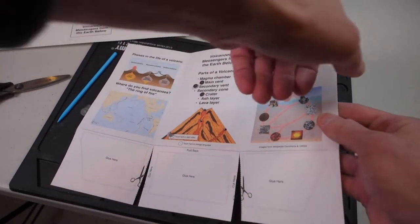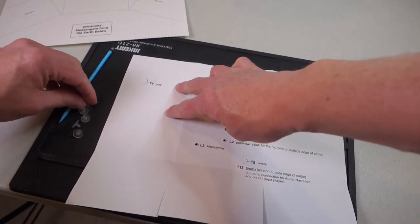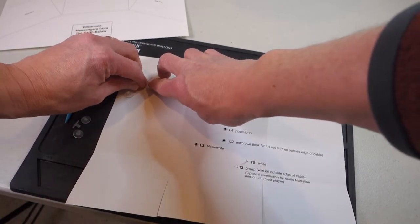Once you've pushed the touch points through, turn the paper over carefully and lay it down flat, and then take the backings and stick them on each of the touch points to hold them in place.